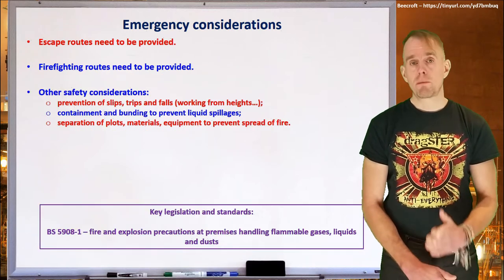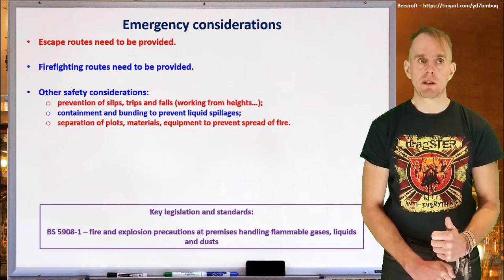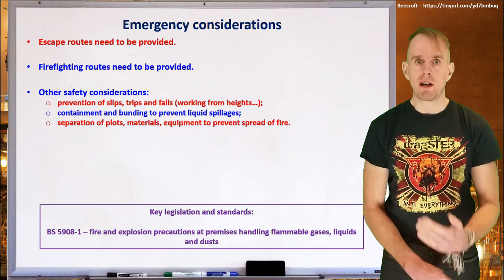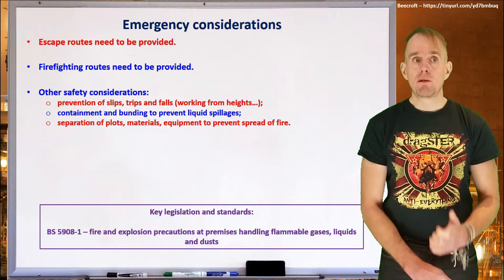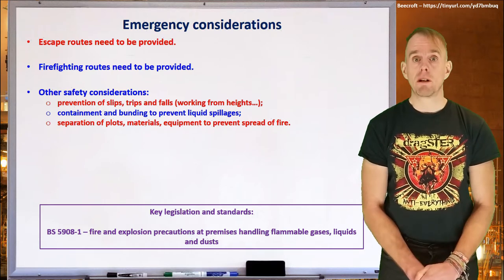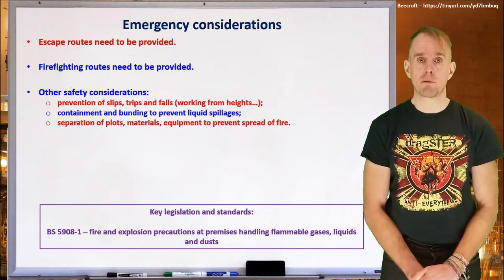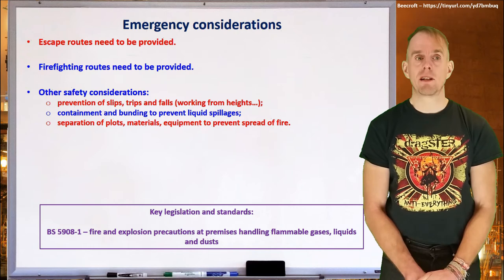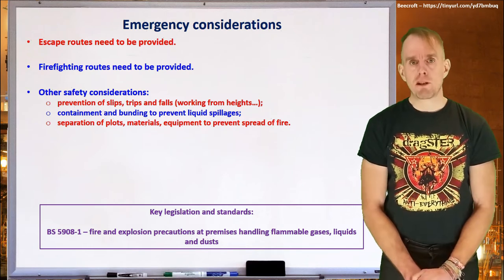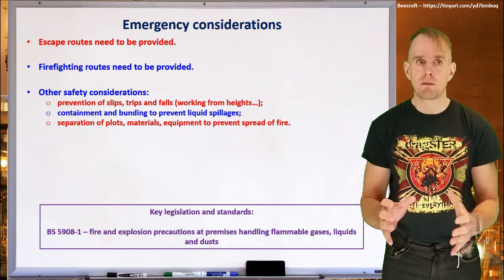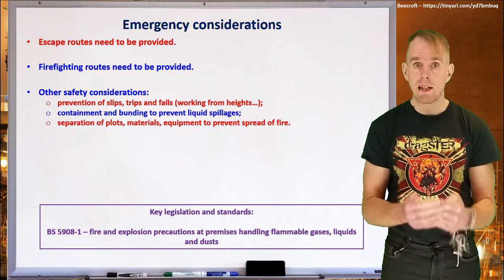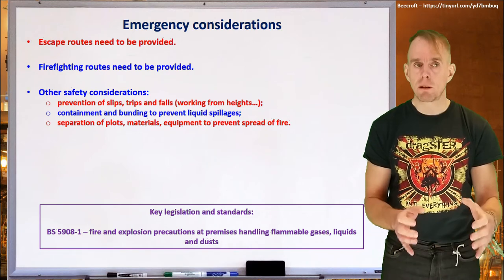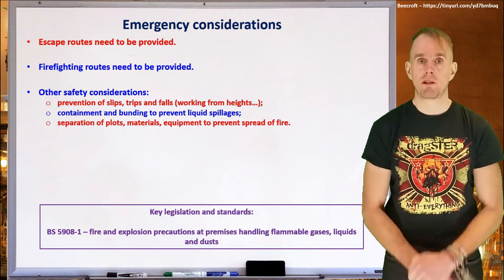Slips, trips, and falls are one of the biggest causes of lost time at work — ranging from tripping over a curb or cabling, through to falling off very tall items such as distillation columns or other process equipment requiring vertical access. Specific guidance covers working from heights, which we will cover shortly. You need to provide containment and bunding to prevent liquid spills from unit operations. Tanks and tank farms will have small walls around them to contain any leaks. Finally, separating plots, materials, and equipment is one of the ways to arrest the spread of an inferno.